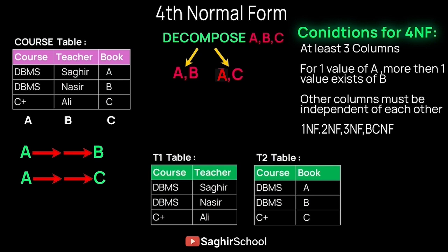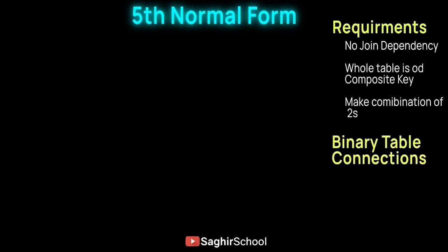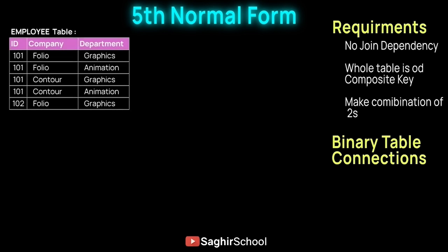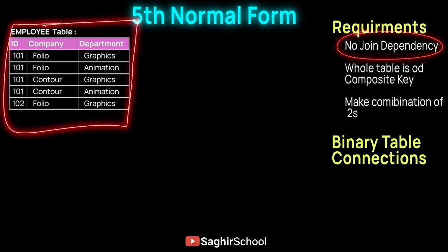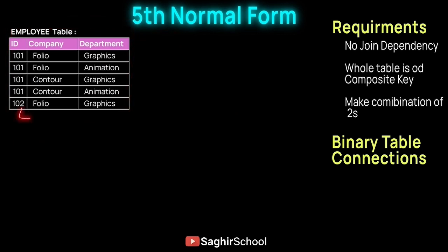For Fifth Normal Form, all previous normalization forms — First, Second, Third, and BCNF — must already be satisfied. The additional requirement for Fifth Normal Form is that there should be no join dependency. Join dependency means any attribute can be used to guess another attribute in the table. In our department table, Department cannot guess Company or ID, so there is no join dependency.